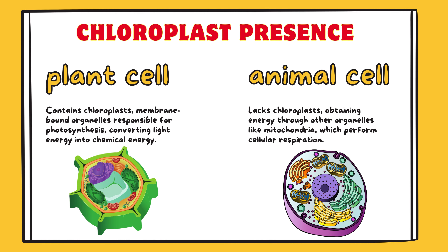Chloroplast presence. Plant cell: contains chloroplasts, membrane-bound organelles responsible for photosynthesis, converting light energy into chemical energy. Animal cell: lacks chloroplasts, obtaining energy through other organelles like mitochondria, which perform cellular respiration. These detailed explanations highlight the distinctive features of plant and animal cell membranes, showcasing the remarkable adaptations in structure and function that have evolved in these cellular entities.